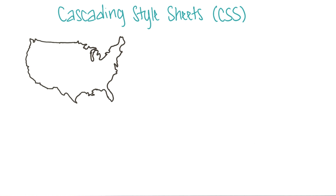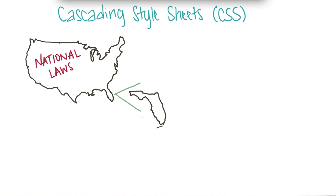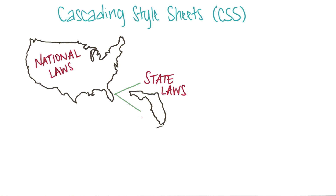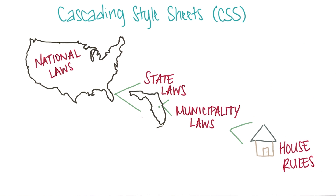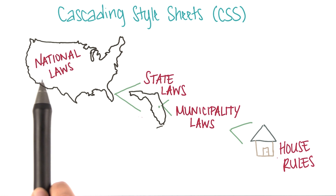Think of it in terms of laws. You have a national law that deals with how your country is organized. Then you might have state laws, which tell you what you can or cannot do in a given state. Then you might have municipality laws, which specify what you can or cannot do in your city. And then you might have your own house rules. Well, CSS is a bit different, because with CSS, the most specific rule is applied to every element. So your house rules would actually be the same as the national laws.